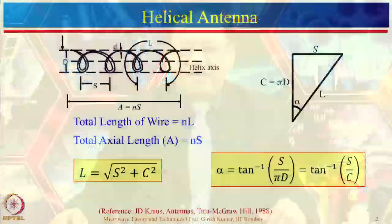A helical antenna is defined by its diameter capital D. The wire diameter is small d, and the spacing between each turn is defined by S.